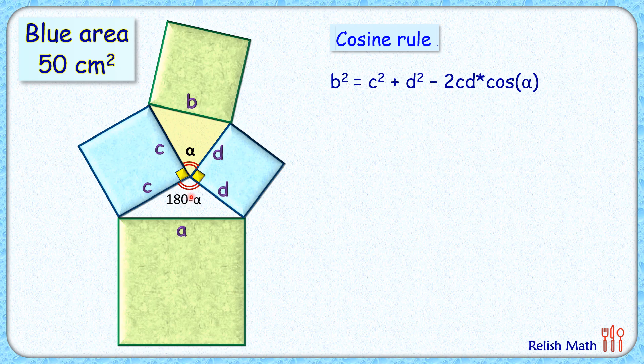Now in this pink triangle, if we apply the cosine rule again, three sides are given and one angle is given. So we'll say that this side which is opposite to the given angle a, so a squared is c squared plus d squared.